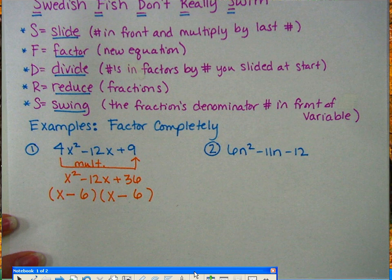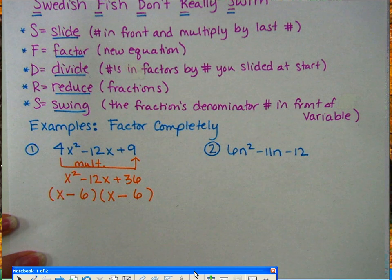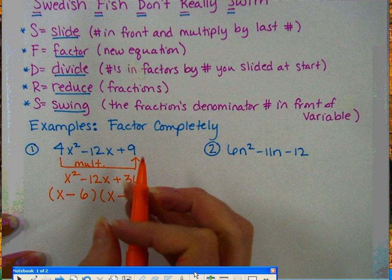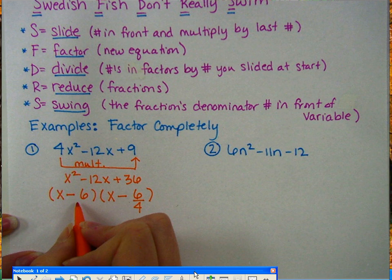Now we're not done because we did the slide, we factored, now we have to divide. So what do you divide by? You divide by the numbers you originally slid in the first step. So divide each of these by 4.